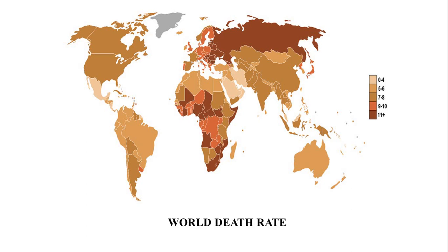Growth rate of population: the difference between the birth rate and death rate of a country is called the growth rate of population. The increase in the population of the world is mainly due to a sudden increase in the natural growth rate. When death rate is more than the birth rate, the growth rate is negative. On the other hand, when birth rate is more than the death rate, there is a positive growth rate. Developed countries of the world have a low growth rate, while developing countries have a higher growth rate.